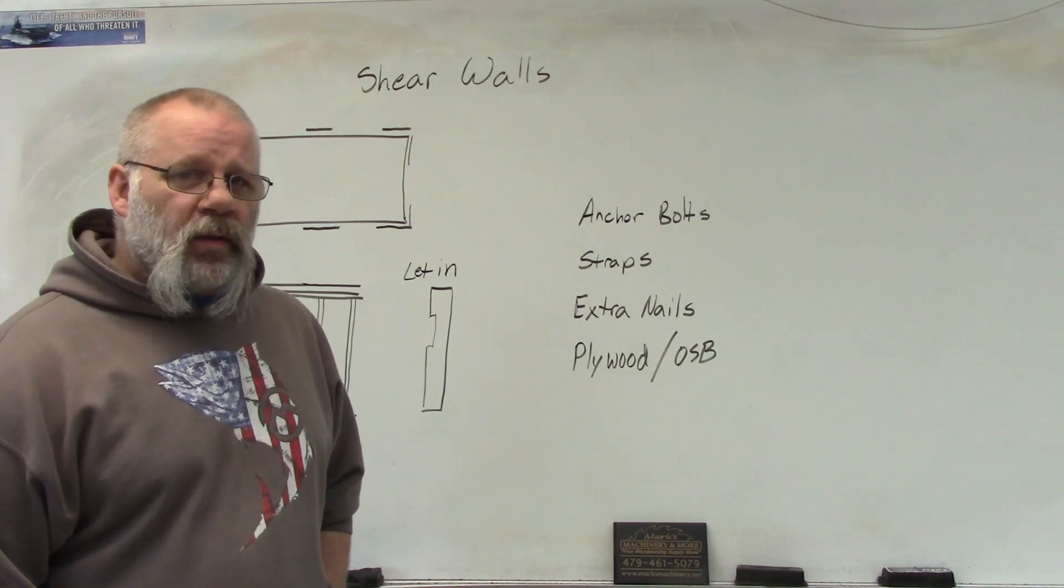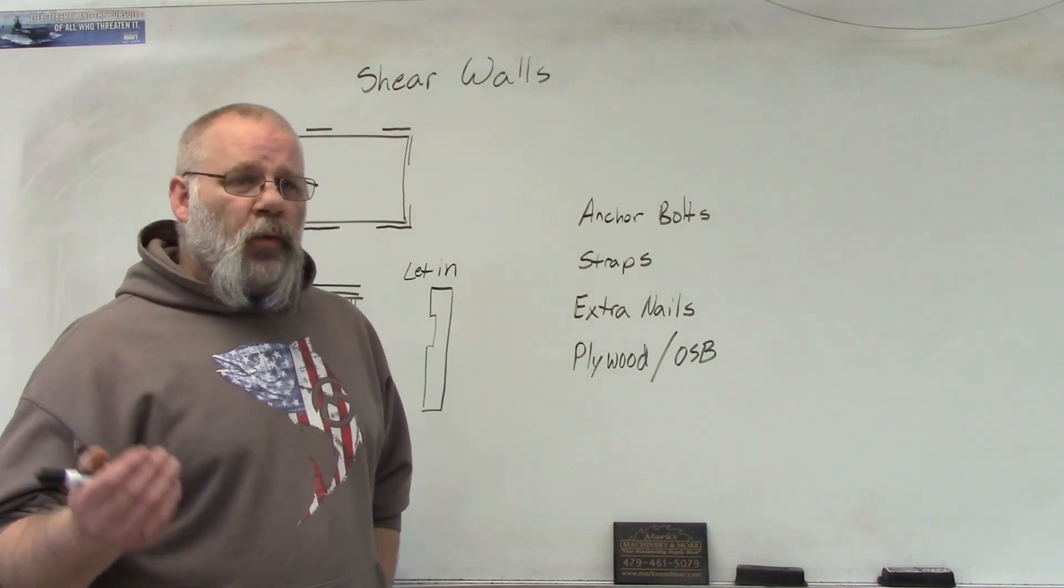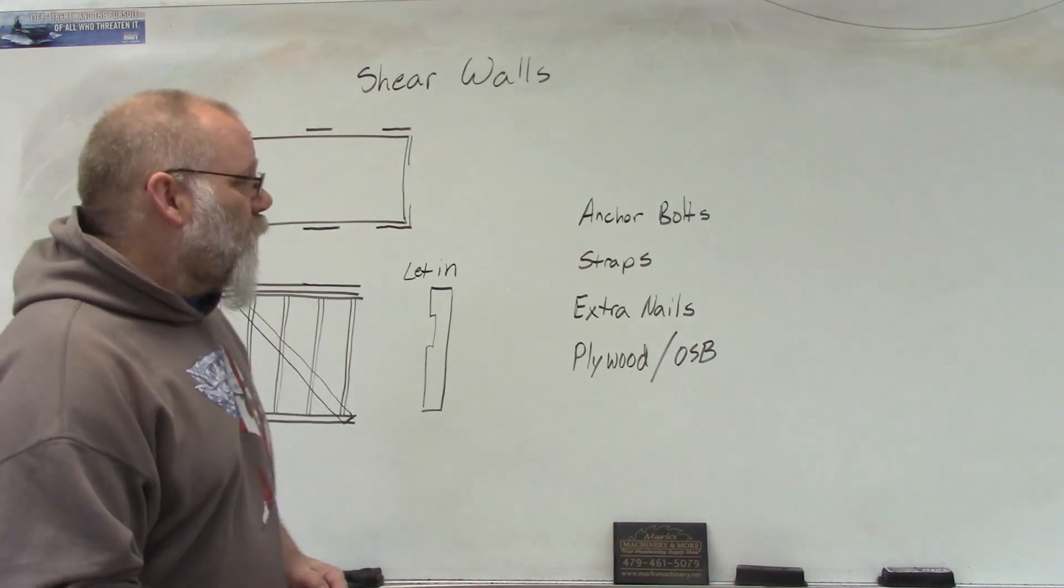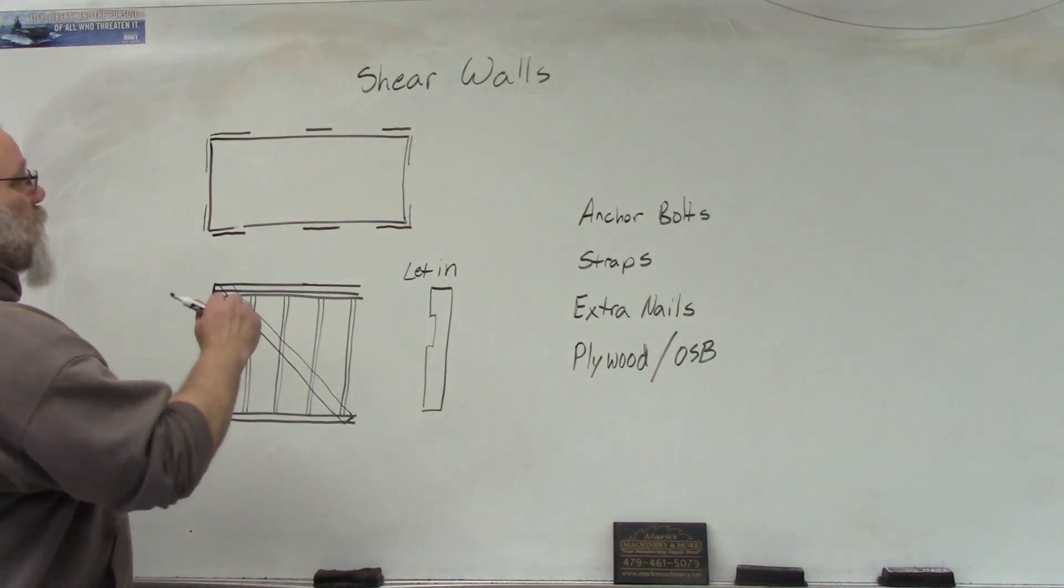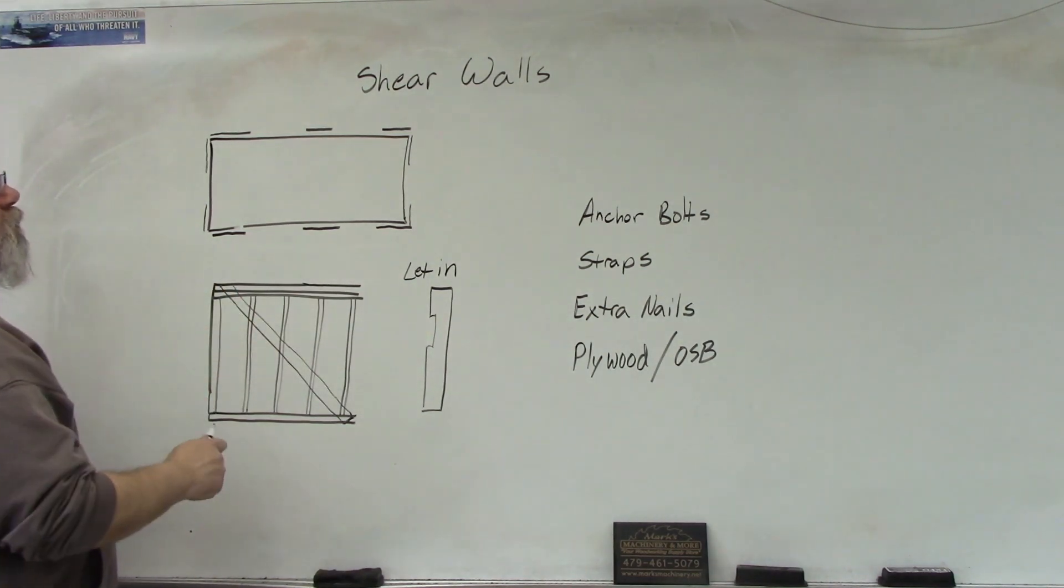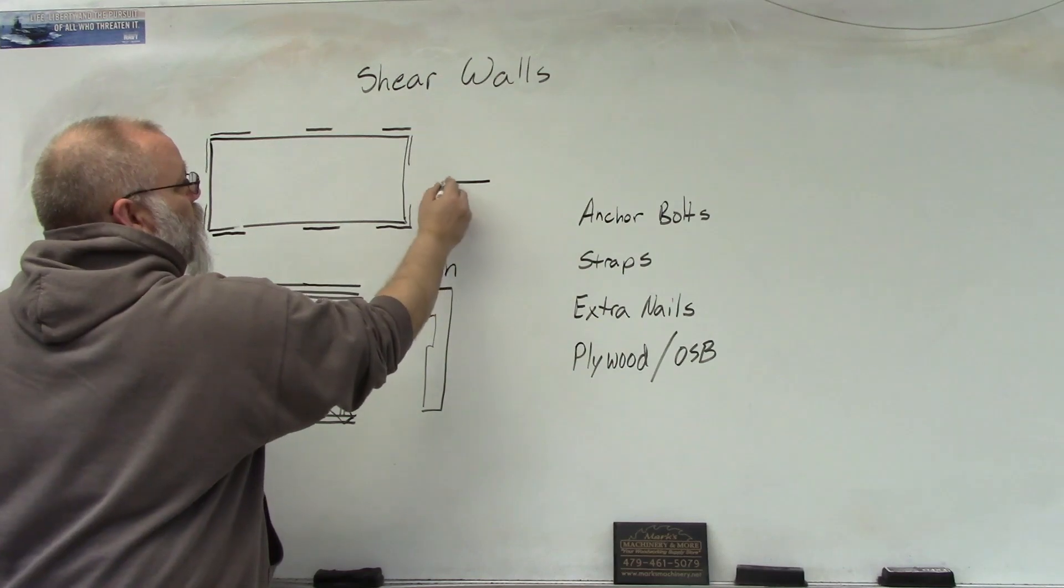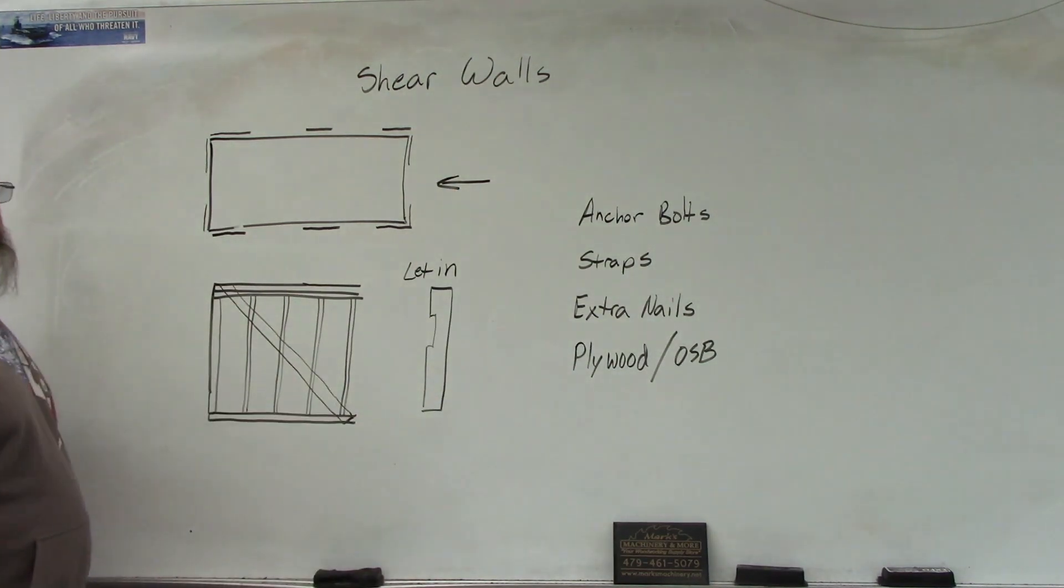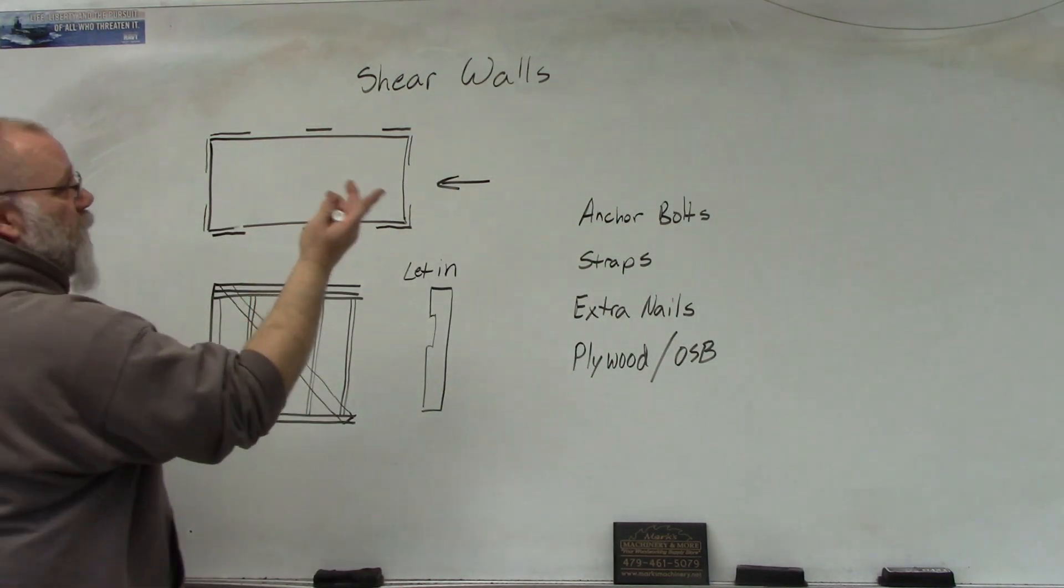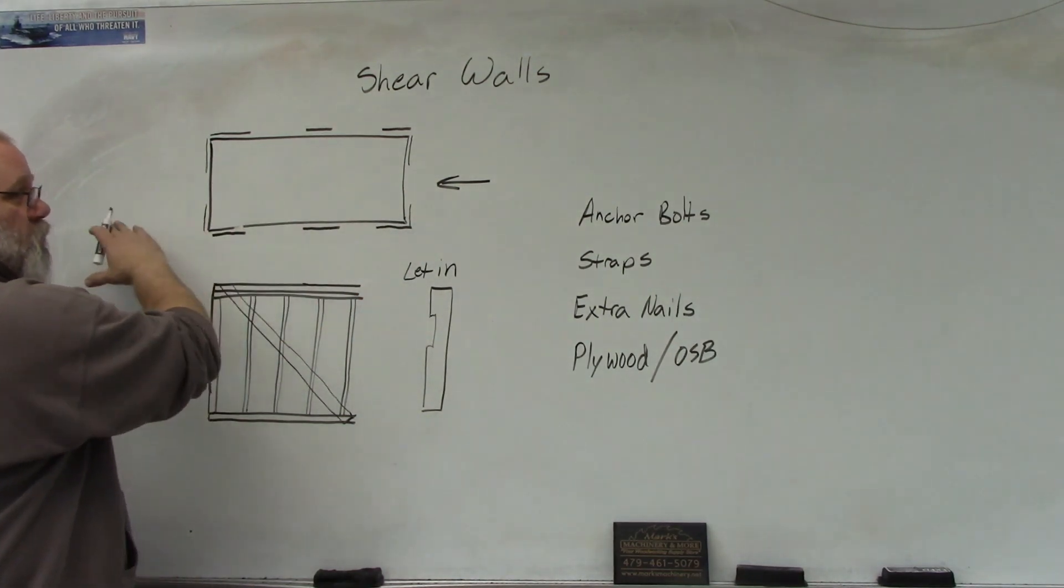Shear walls are designed for a force that comes against the side of your house. In this example, if you have a regular ranch style house, when the wind blows it's going to put a force against the side of your house and it's coming from that direction, which means it's going to want to push the house over this direction.